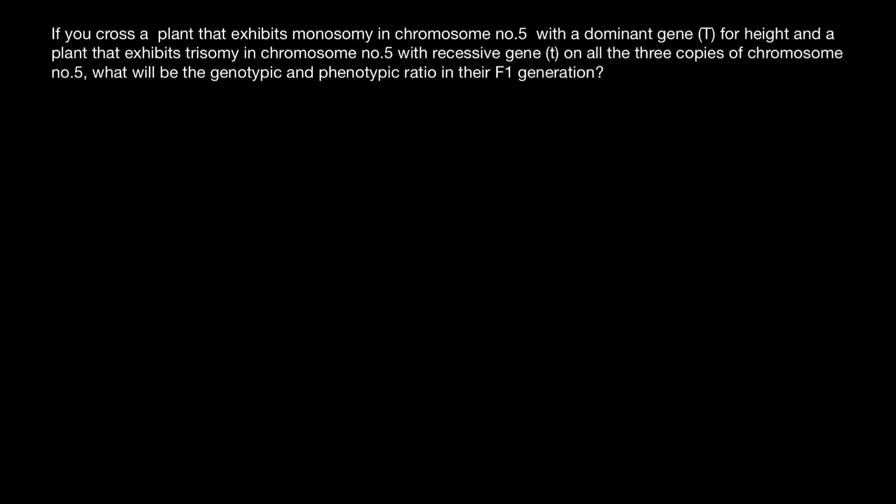If you cross a plant that exhibits monosomy in chromosome number five with dominant gene T for height, and a plant that exhibits trisomy in chromosome number five with recessive gene t on all three copies of chromosome number five, what will be the genotypic and phenotypic ratio in the F1 generation?